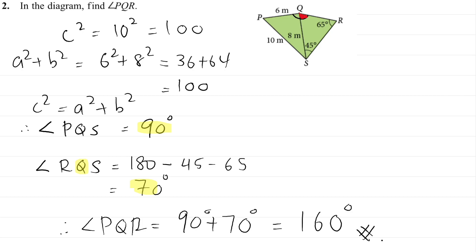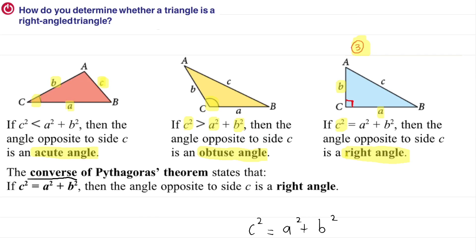We have completed Chapter 13. In Chapter 13, you must be able to use the Pythagorean Theorem to find unknown lengths and hypotenuse, and also use the Converse of Pythagorean Theorem to determine whether an angle is a right angle. If it is not, there are two cases: when C squared is less it is an acute angle, and when C squared is more it is an obtuse angle. That is all for today's video. Thank you class, bye bye, assalamualaikum.